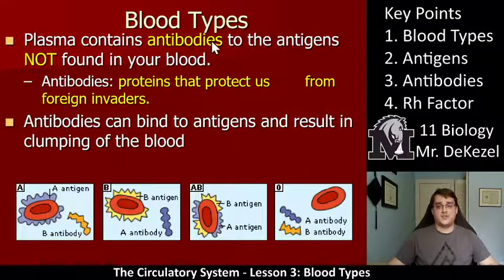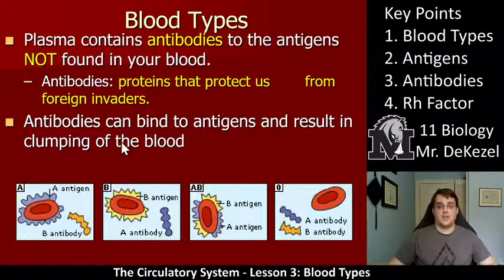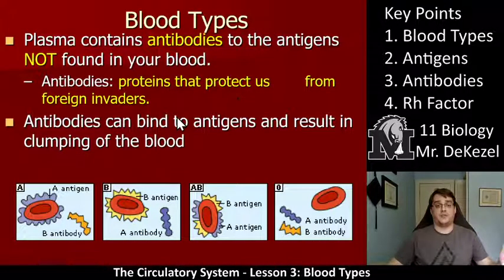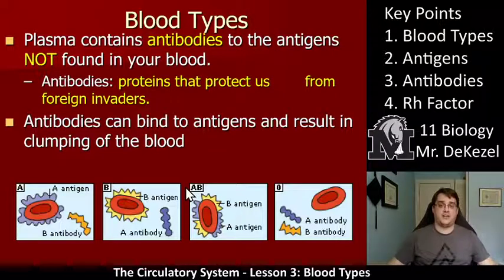Plasma contains antibodies to the antigens not found in your blood. Antibodies protect us from foreign invaders. So if we have the A antigen, we have the B antibody; if we have the B antigen, we have the A antibody; if we have both, we have none in the plasma; and if we have nothing on the red blood cell, we have both in the plasma. The whole purpose of antibodies is to check if we have the right type of blood. If antibodies latch on to the wrong type, it clumps blood so you're not able to have blood flow through the vessels — very similar to what happens when you get bitten by a snake.